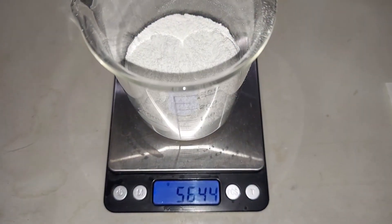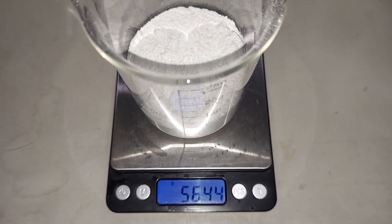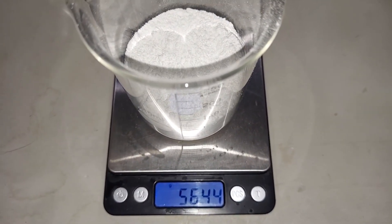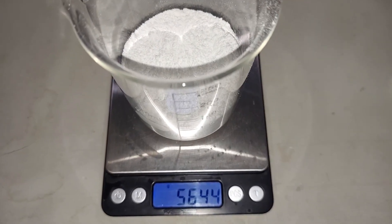Combining the calcium acetate I just made with what I already had. I have 56.44 grams of calcium acetate that we'll start with in making our acetone.